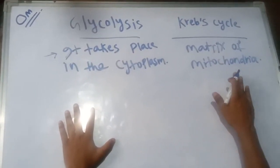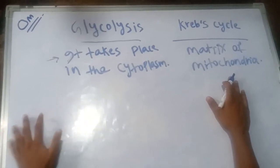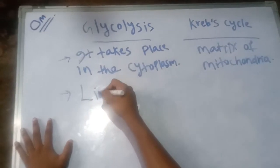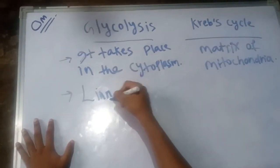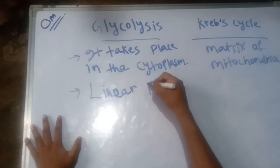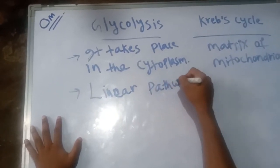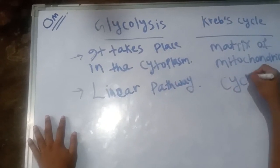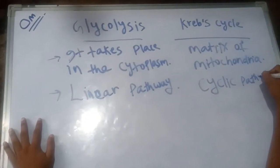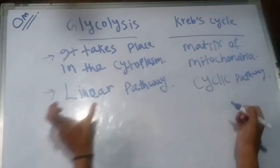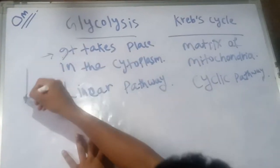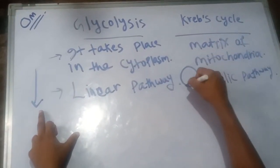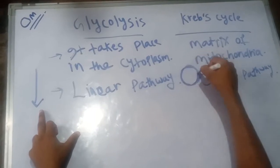The second difference: glycolysis is a linear pathway, whereas the Krebs cycle is a cyclic pathway. You can see glycolysis is a linear pathway, but in the case of Krebs cycle it is a cyclic pathway — like a cycle.